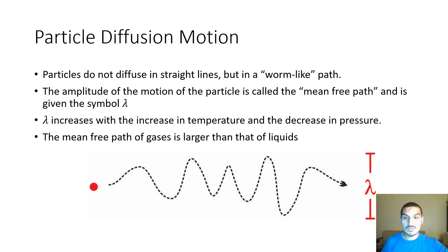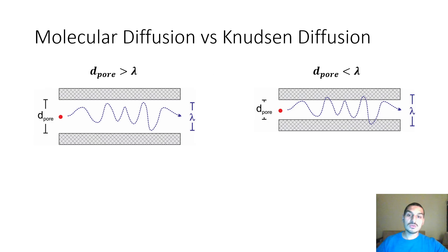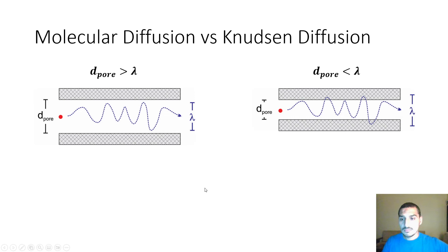This concept of mean free path tells us a lot about diffusivity in solid pores. We will imagine a theoretical case where the pore is a perfect cylinder — with a uniform diameter, straight, and no irregularities. This is the ideal case on which our calculations will be based.